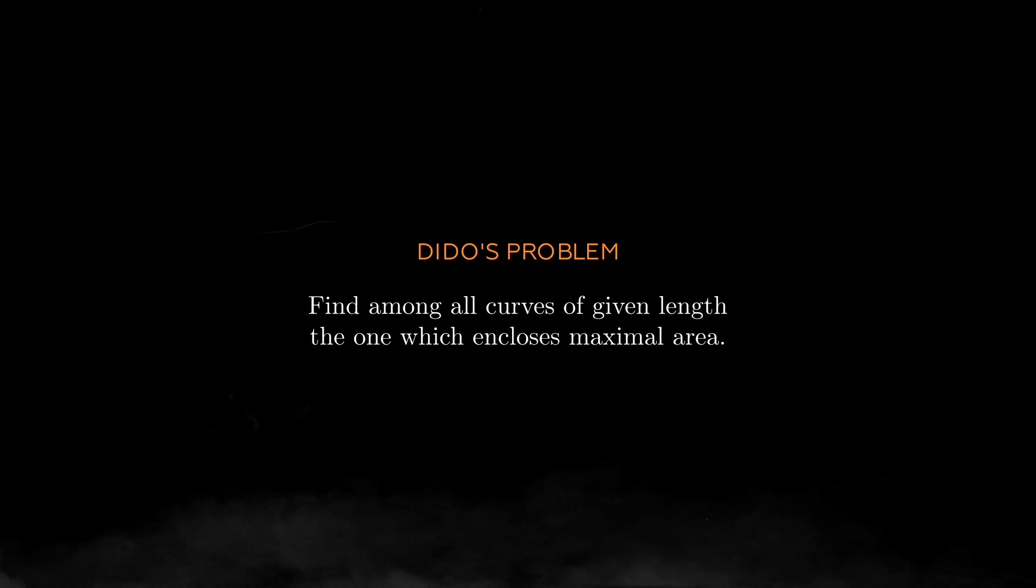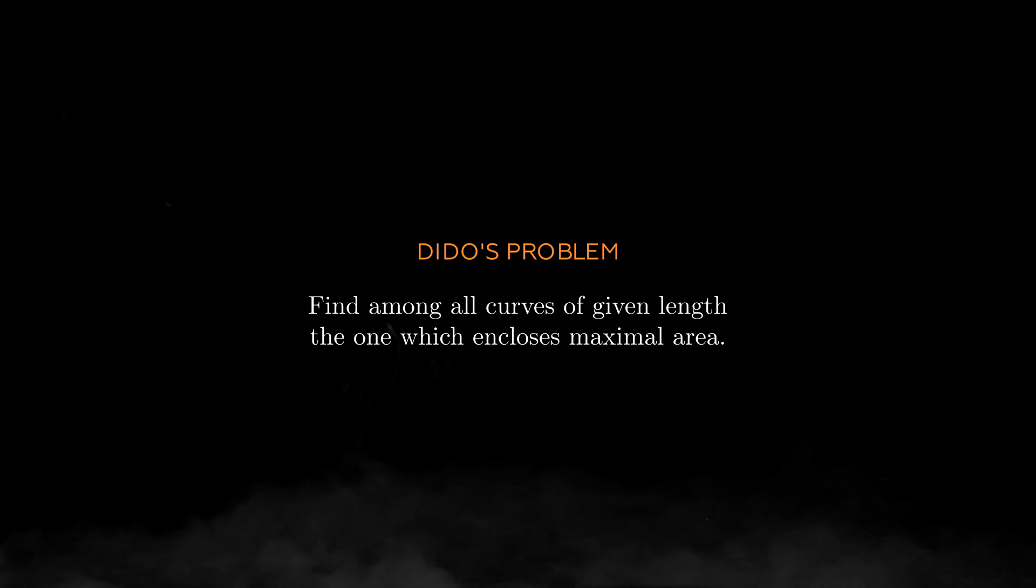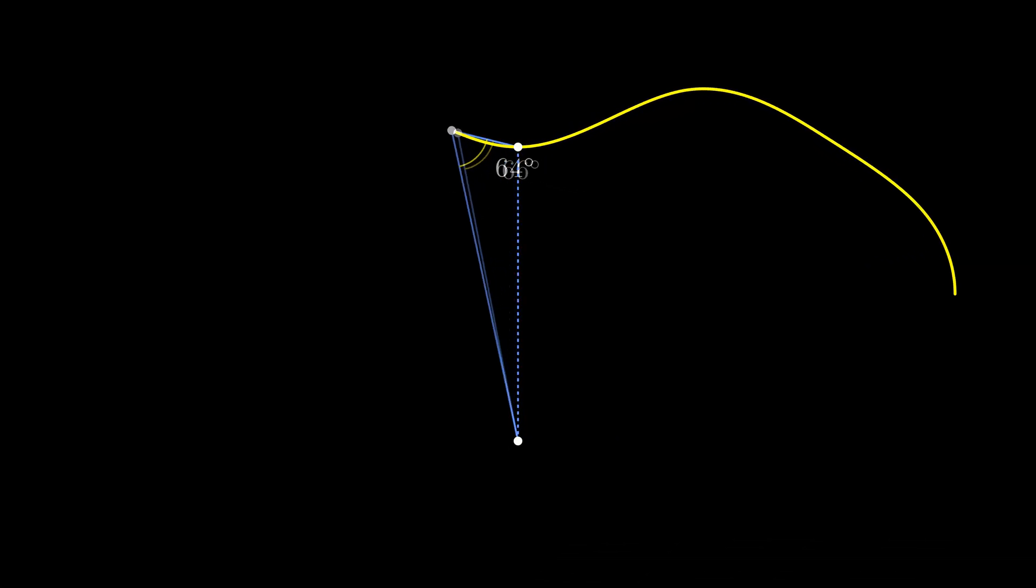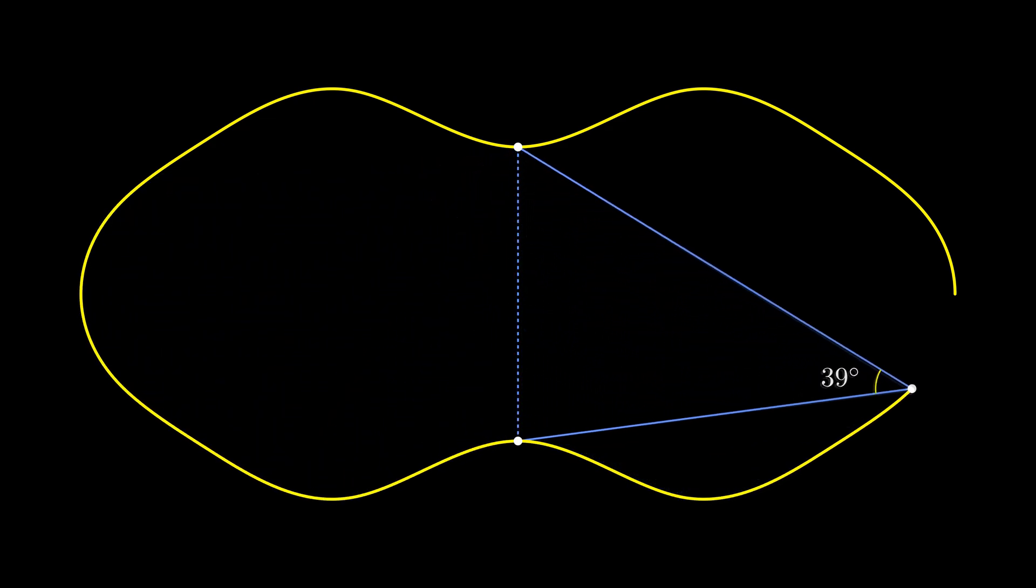Out of all these curves we need to find the one that has a minimal length. It is equivalent to finding the curve of a fixed length that encloses a region with the maximum area, meaning that we came to the famous isoperimetric problem. The solution is almost on the surface, but the convincing proof of it only appeared two and half thousand years later.